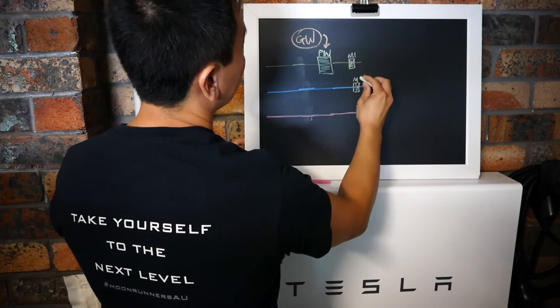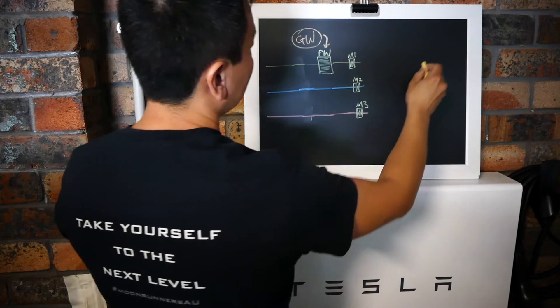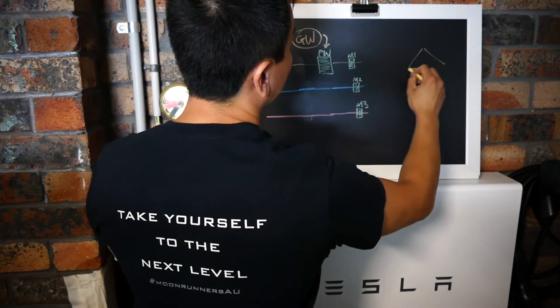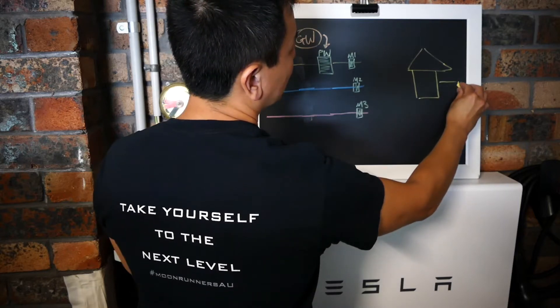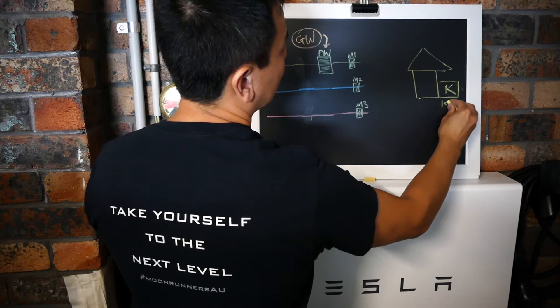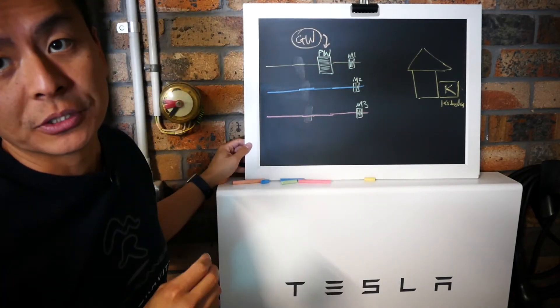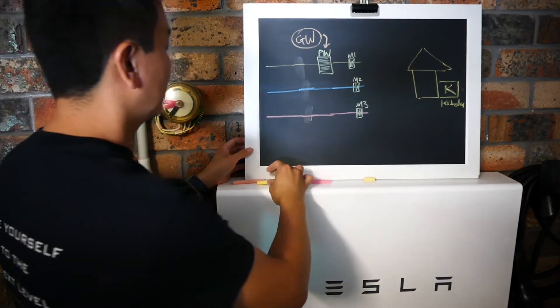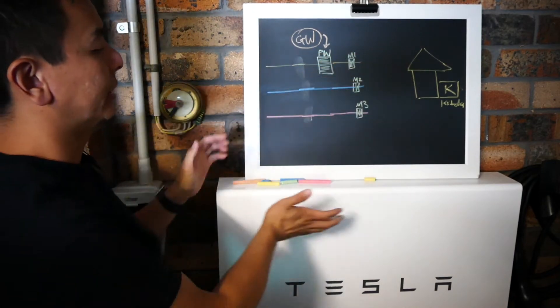So there are three phases and then there are meters across those three phases. So one meter, two meters and three meters. I'm going to call it meter one, meter two, meter three. On this end here I'm going to draw your house and I'm going to draw a little box here called K for kitchen. You'll see why very shortly why I called that kitchen. It's very important.